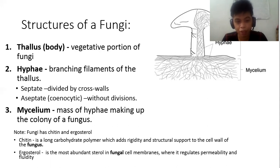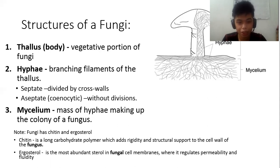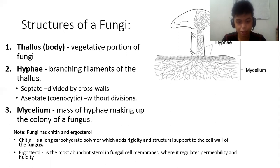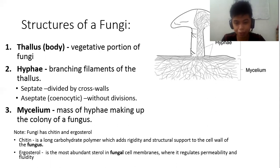It is also important to note that fungi have chitin and ergosterol. These are very important components of the cell wall and membrane that ensure integrity and stability. Chitin is a long carbohydrate polymer that adds rigidity and structural support to the cell wall. Ergosterol is the most abundant sterol in the fungal cell membrane, regulating permeability and fluidity — controlling which nutrients pass through.